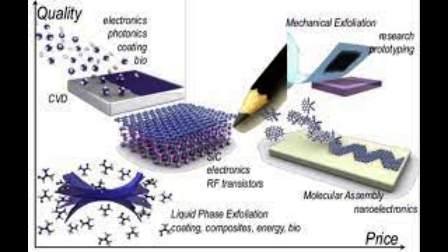The choice of graphene production method depends on factors such as the desired quality, quantity, and application of the graphene, as well as economic considerations. Researchers continue to develop and refine these methods to make graphene production more cost-effective and scalable for various industrial applications.